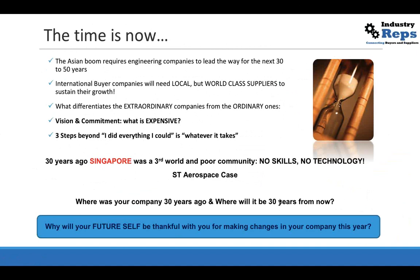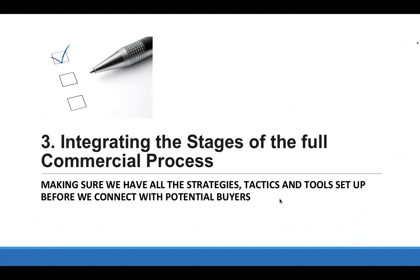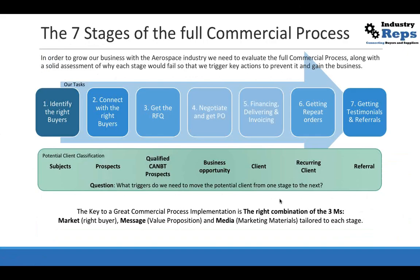Now we'll see the full commercial process. In the past we saw what the opportunity was and got into the mindset. This is a very important slide — these are the seven stages of the full commercial process. We're going to see each one of the stages. In the middle in blue ink, we have the tasks we need to do, and on the green tab we have basically the classification of the people we're dealing with.